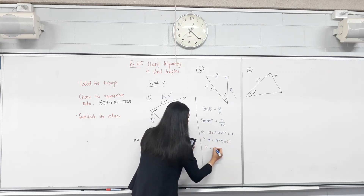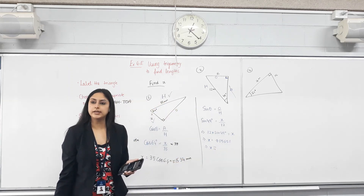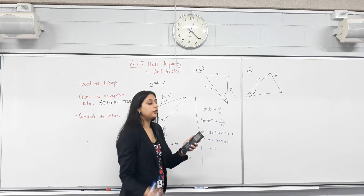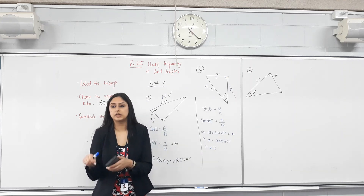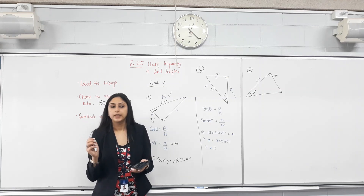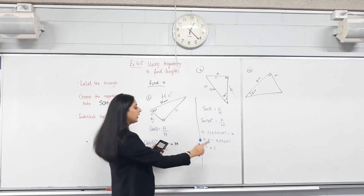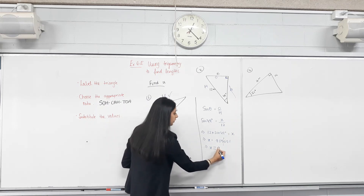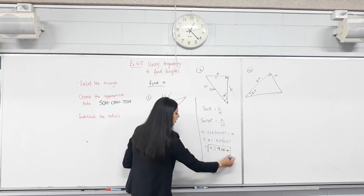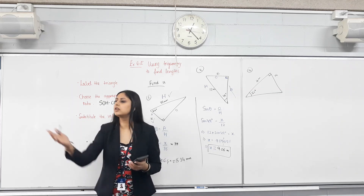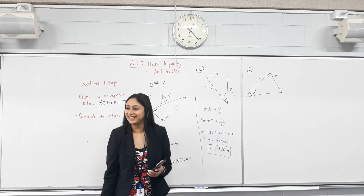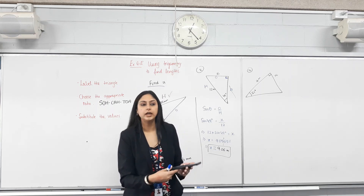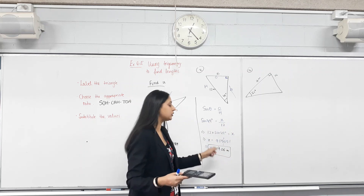We get 9.05651. We need to round it to two decimal places, so we look at the third decimal place — it's 6, so this rounds up to 9.06. Also note: if you calculate in degree mode you don't need to specify degrees again. And notice I've used this symbol — the approximately-equal sign — because 9.05651 is not exactly equal to 9.06, it's an approximation. Whenever I round, I always use the approximately-equal sign.